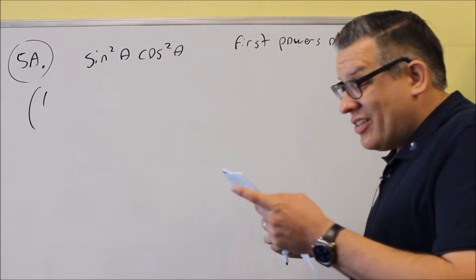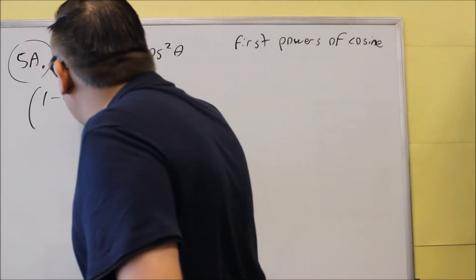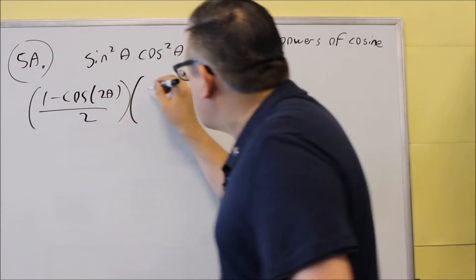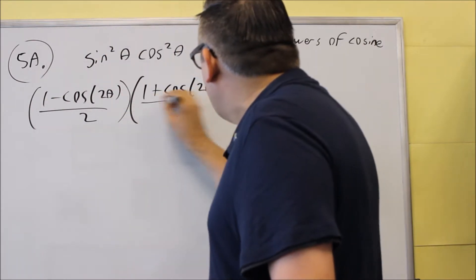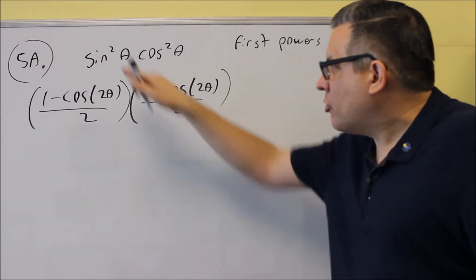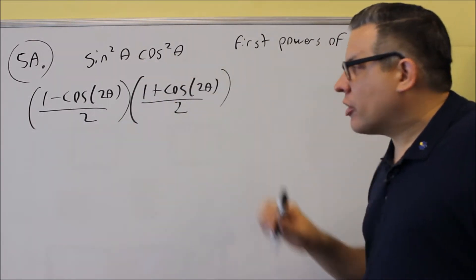The first thing we'll do is put in the power reducing formula for the sine squared, which is 1 minus cosine of 2 theta over 2. This one is 1 plus cosine 2 theta over 2. So I use a different power reducing formula, one for the sine squared, one for the cosine squared.